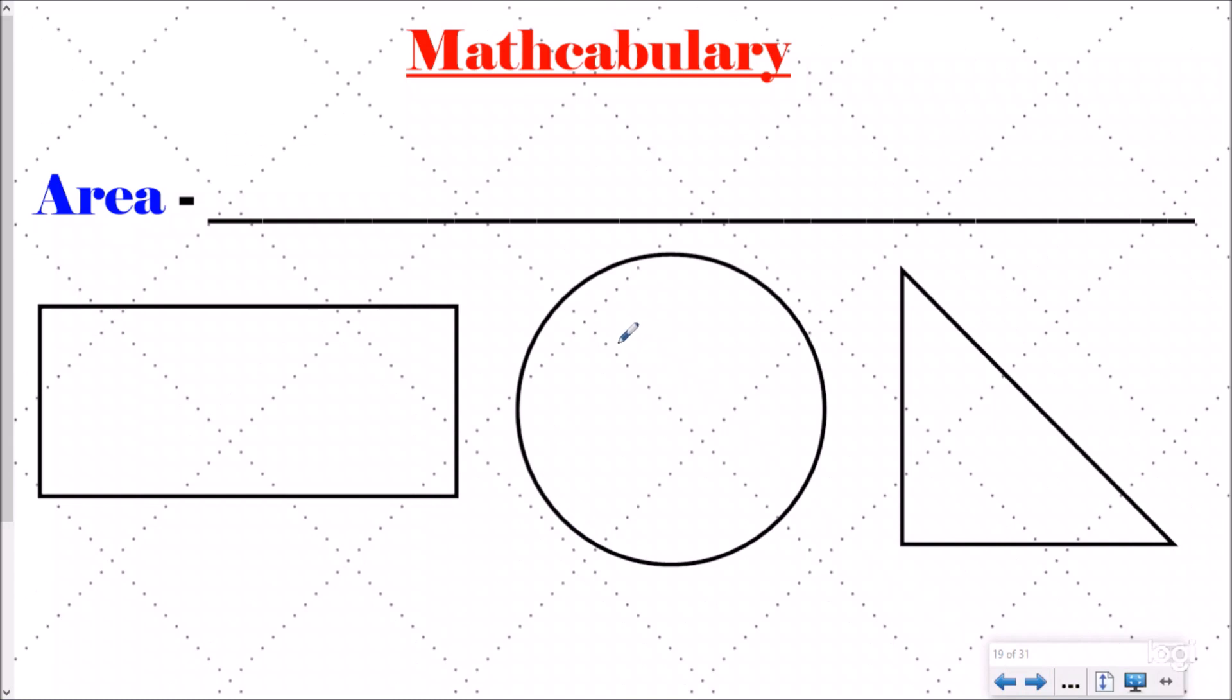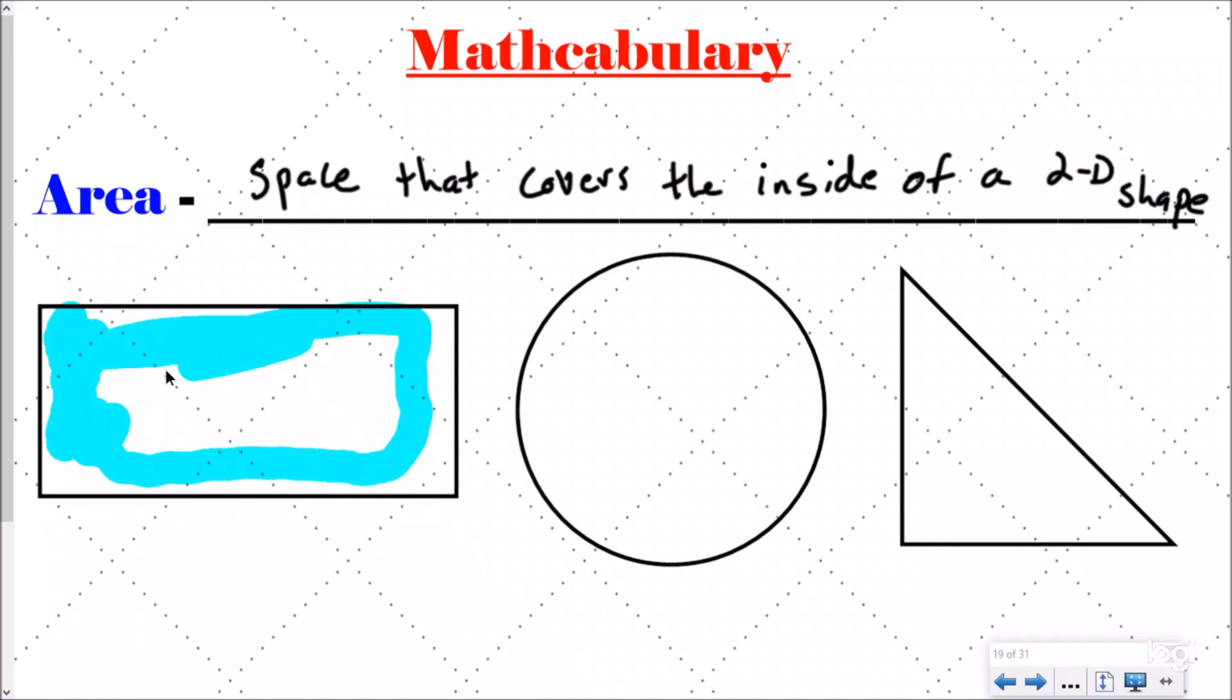So our mathcabulary. This is a review of our first video in this series. But area is the space that covers the inside of a two-dimensional object. And so we have a couple two-dimensional shapes right here. We have a rectangle, circle, and a triangle. And area is the same for all of them. The area is the space that it would take to cover completely the inside of the shape.